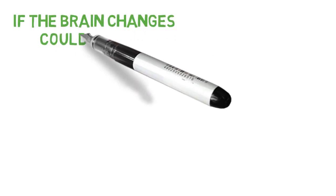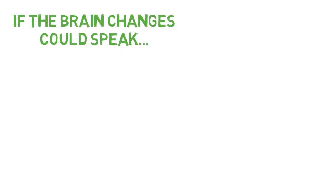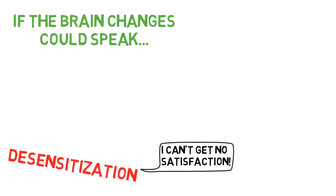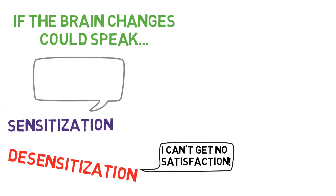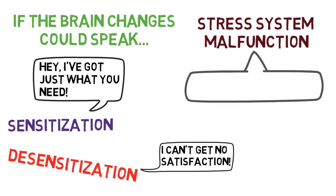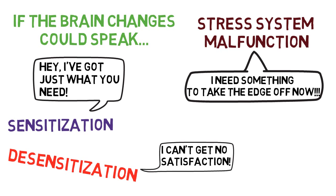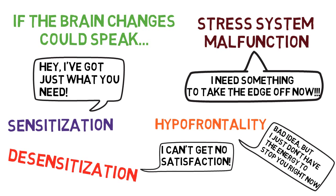So to really drive this home, if the brain changes could speak, desensitization would say, I can't get no satisfaction, and sensitized pathways would instantly poke you in the shoulder and go, Hey, I got just what you need. And your stress system would scream, I need something to take the edge off, now. And finally, hypofrontality would sigh and say, Bad idea, but I just don't have the energy to stop you right now. Oh man,